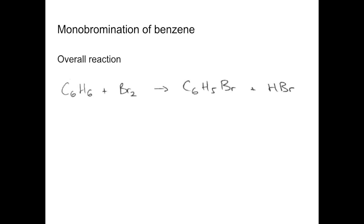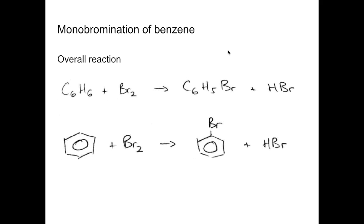So we'll look at the monobromination of benzene now — a very similar reaction. Overall it looks like that. You can see we've lost a hydrogen from the ring and it's been replaced by a bromine atom. And we get HBr as the other product.